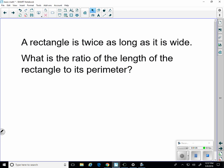A rectangle is twice as long as it is wide. What is the ratio of the length of the rectangle to its perimeter? So we don't know how wide it is. We'll just call it W. But we know that this one is twice as much, so we'll call it 2W. So if we're looking at a perimeter, we're looking at the distance around.